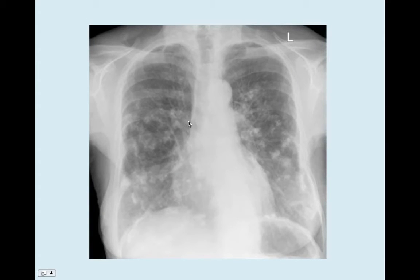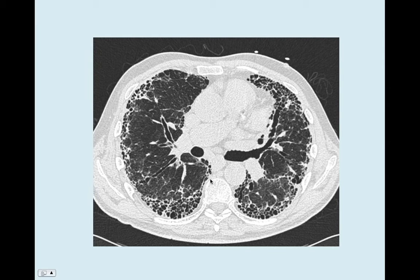This is a patient with much more advanced asbestos exposure — you can probably see some thickening and some calcifications there. This is a CT in a patient with advanced interstitial lung disease, which could be sarcoidosis, collagen vascular disease, any of the environmental diseases, or advanced asbestosis. This honeycombing pattern — these large holes — is just due to the inflammatory process.